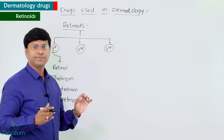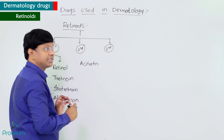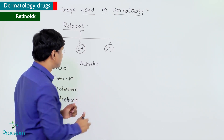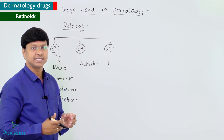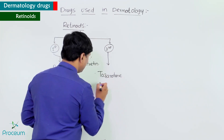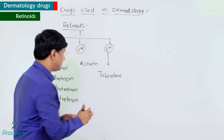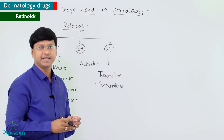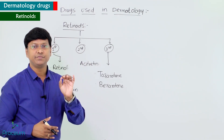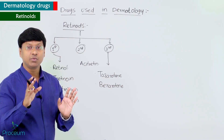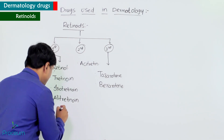The second generation retinoids include acitretin. The third generation retinoids include tazarotene and bexarotene. Additionally, there are retinoid-like compounds, represented by adapalene.